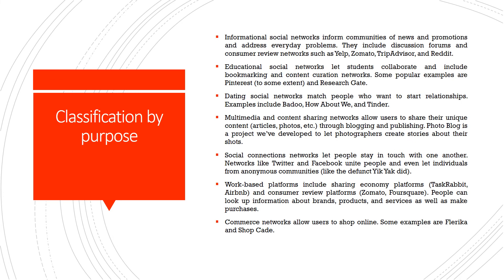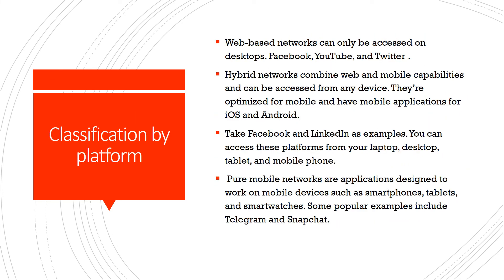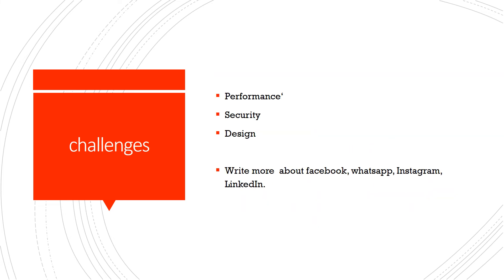Classifications are based on the type of audience, purpose, and platform. The challenges that are faced in social networking applications are performance, security, and design. Security means how your photos and information should be safeguarded on Facebook, WhatsApp, or TikTok. It should give security for your information, have high performance, and a simple, clear design — not a complicated one. These are the three important challenges required in a social networking application.